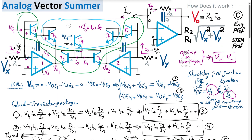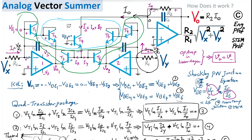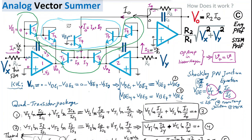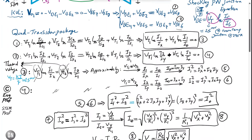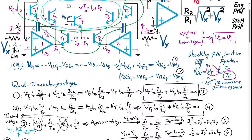The two R1 resistors must be matched to better than 1% accuracy. Thin film resistors are the recommended choice, offering accuracies of 0.1% or even 0.01%. That concludes the analysis and design of this analog vector summer circuit.